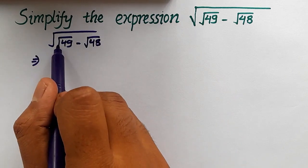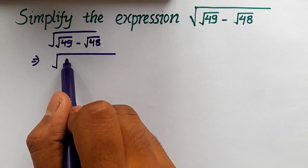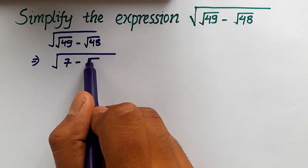Now, √49 equals 7, so let's write √(7 - √48).